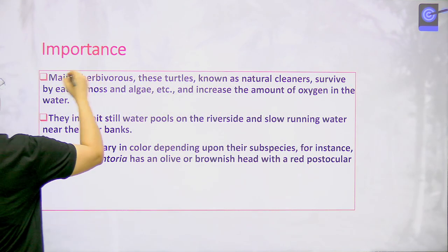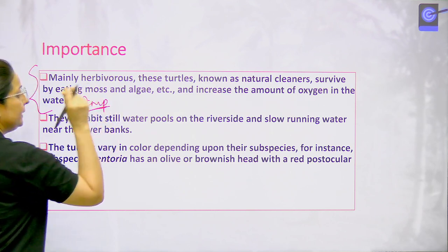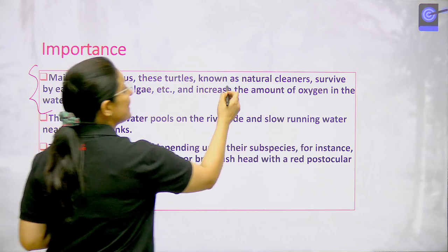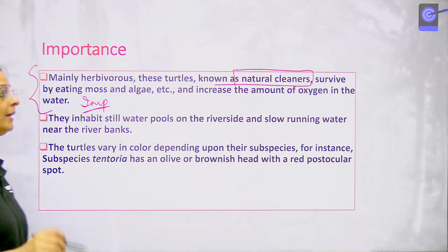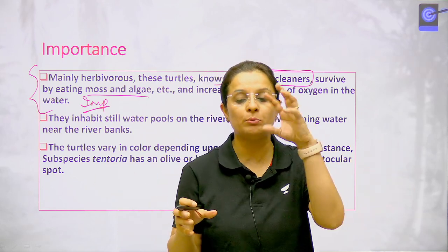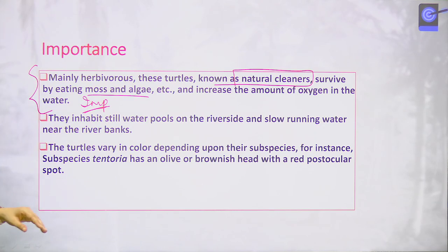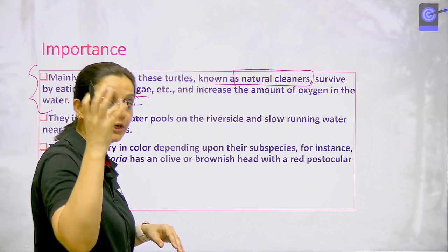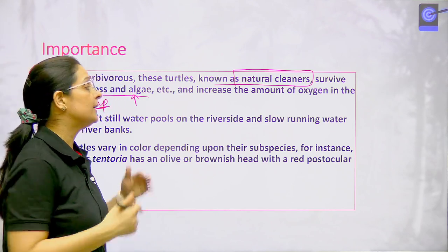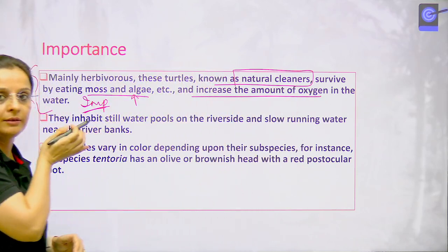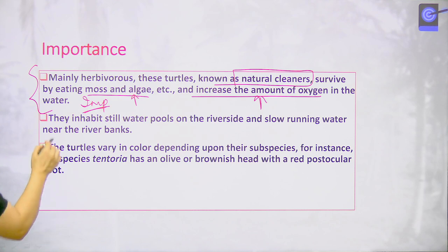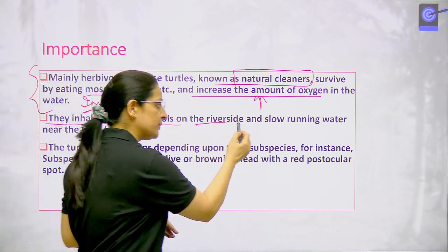A very, very important point: these species are generally herbivores, known as natural cleaners. They majorly survive by eating moss and algae. When moss and algae accumulate in water and are not eaten, algae multiply and reduce the oxygen level in the water. But when these turtles eat the moss and algae, the amount of oxygen increases. Therefore, they are very, very important for the water ecosystem.